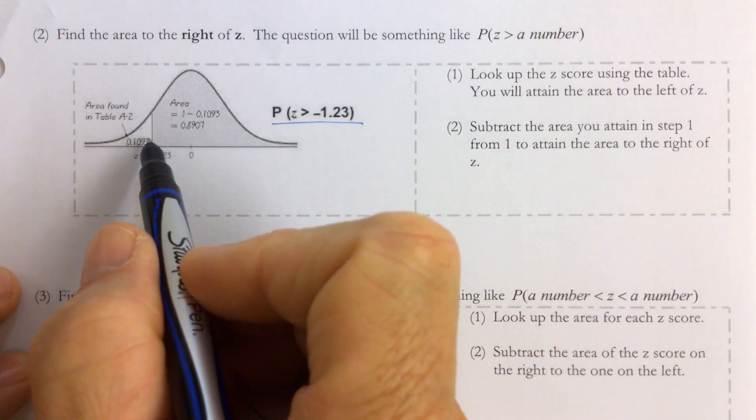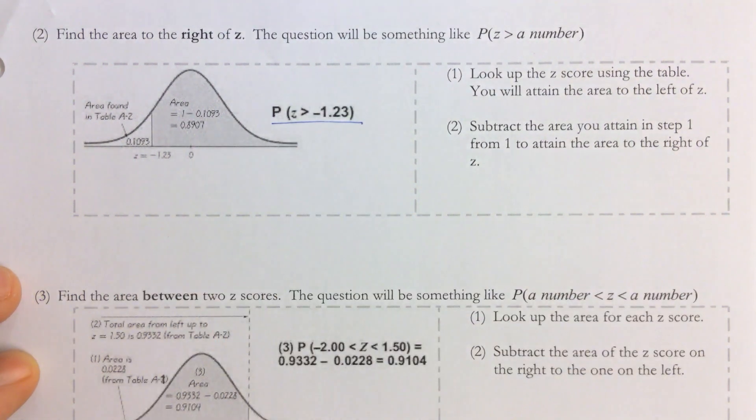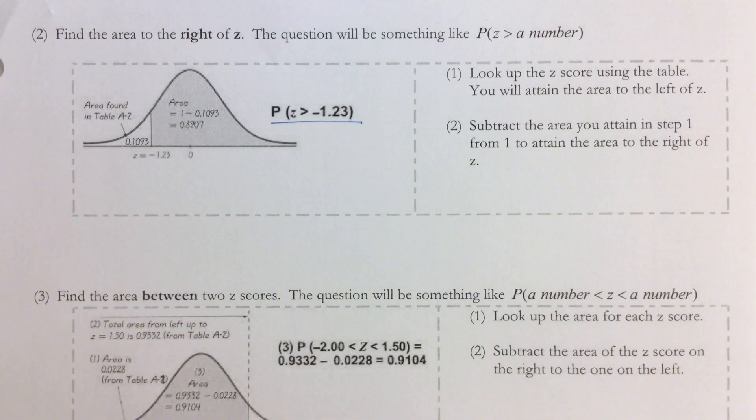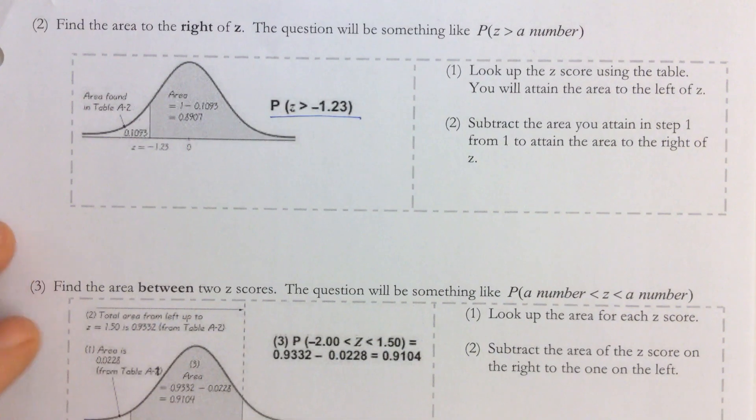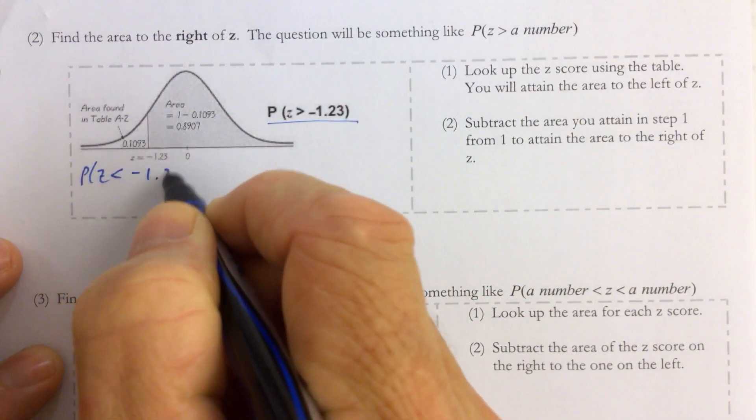So if we look up the z-score of negative 1.23, let's practice that. See if you can maybe pause the video and see if you can find that on your own. First find the probability that z is less than negative 1.23,